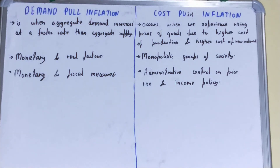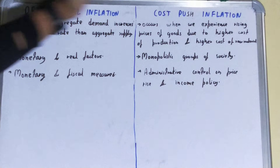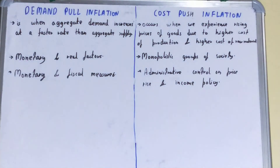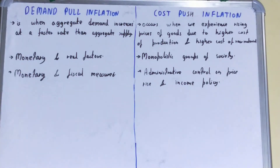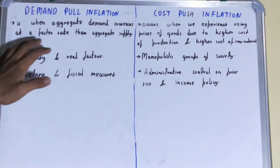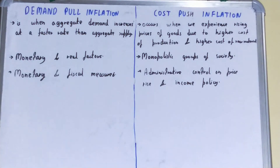Hello friends, in this video I will be helping with the difference between demand-pull inflation and cost-push inflation. If we talk about demand-pull inflation, it is when the aggregate demand increases at a faster rate than the aggregate supply.